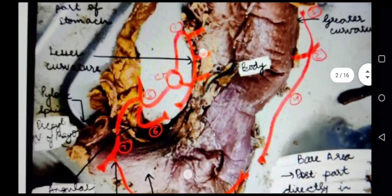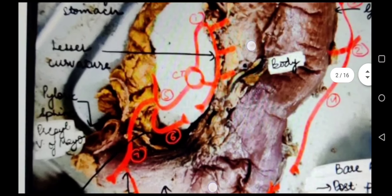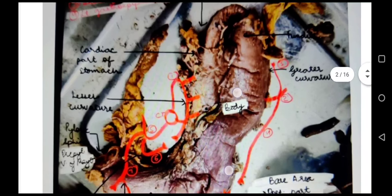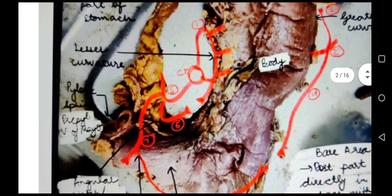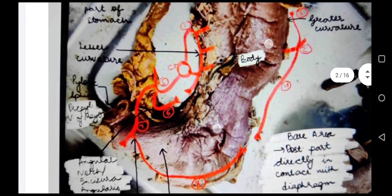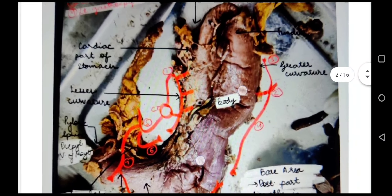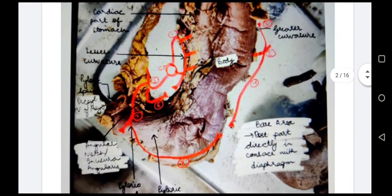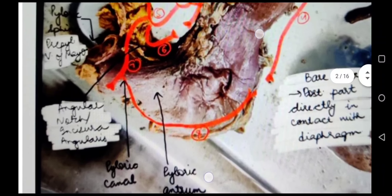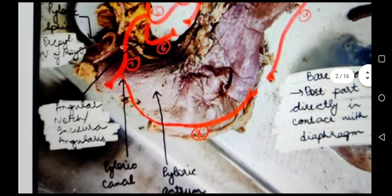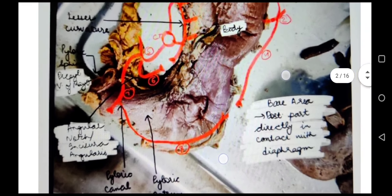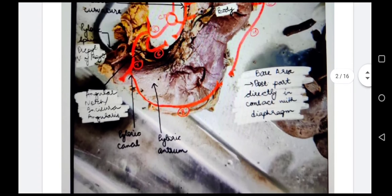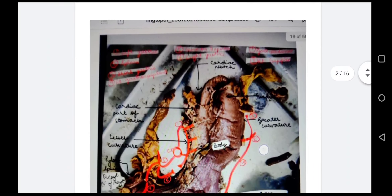Then we have the splenic artery, which runs posteriorly and gives two branches: first, the short gastric artery, and second, the left gastroepiploic artery. Another branch of the celiac trunk is the common hepatic artery, from which the right gastric artery anastomoses with the left gastric artery. We also have the gastroduodenal artery giving the right gastroepiploic artery, which anastomoses with the left gastroepiploic artery.